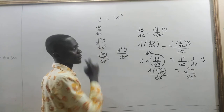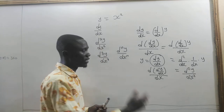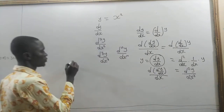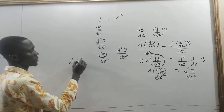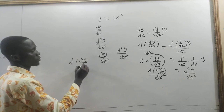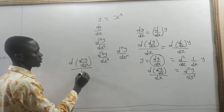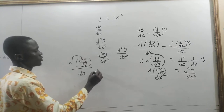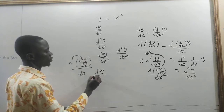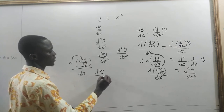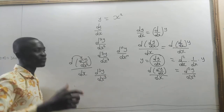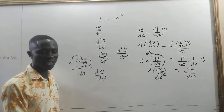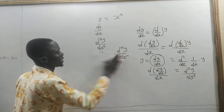If we are differentiating three times, we take d(d²y/dx²)/dx and we are going to get d³y/dx³. Very simple as that — so that is for Leibniz's notation. Now let's take a different notation.